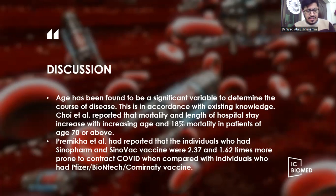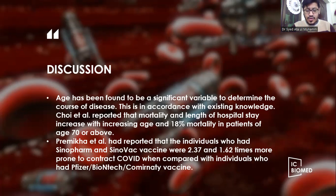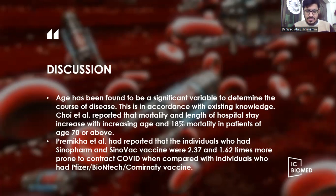A finding not consistent with our study came from Premika et al., which showed that individuals vaccinated with Sinopharm and Sinovac vaccines were 2.37 and 1.6 times more prone to develop COVID-19 compared to those vaccinated with Pfizer. These findings differ from ours, as we found both vaccines to be similar in their efficacy.